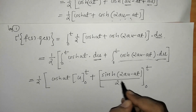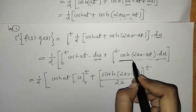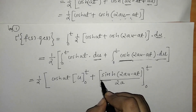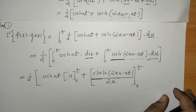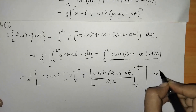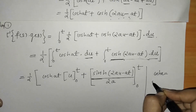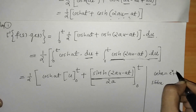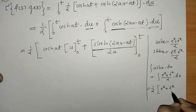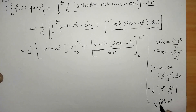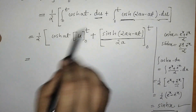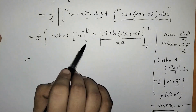We note that the integral of hyperbolic cosine is hyperbolic sine. We know the definitions of cosh(x) and sinh(x), so we have found the integrals of both terms and now we have to apply the limits.